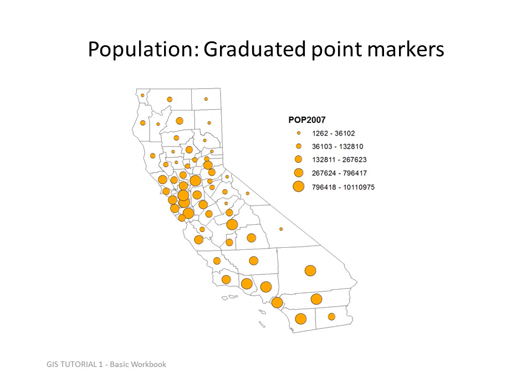As we look at different ways we map population, here's an example of graduated point markers in a population map, where smaller points refer to smaller populations. This particular map still could use some work because the ranges are quite extreme at the upper end — they range from about 800,000 people all the way up to 10 million in the same category, which is misleading if you just glance at the map.